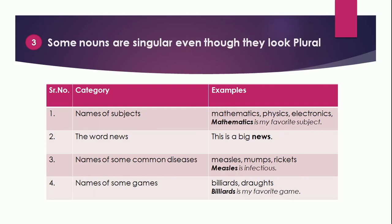Point 3: Some nouns are singular even though they look plural. Names of subjects like mathematics, physics, electronics — for example, 'Mathematics is my favorite subject.' The word 'news' — example: 'This is big news.' Names of some common diseases like measles, mumps, rickets — example: 'Measles is infectious.' Names of some games like billiards, draughts — example: 'Billiards is my favorite game.' These are some nouns which are singular even though they look plural.